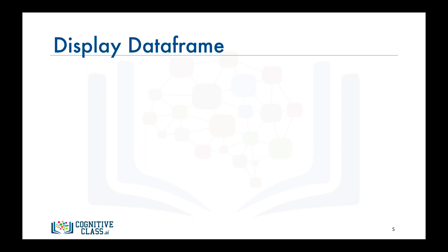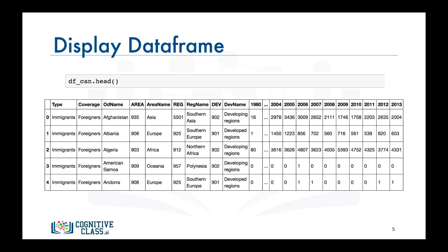If you want to confirm that you have imported your data correctly in pandas, you can always use the head function to display the first five rows of the data frame. So if we call this function on our data frame df_can, here is the output. As you can see, the output of the head function looks correct with the columns having the correct labels and each row representing a country and containing the total number of immigrants from that country.